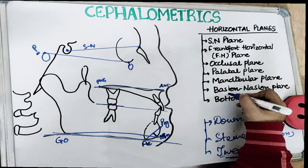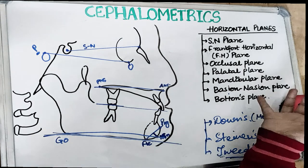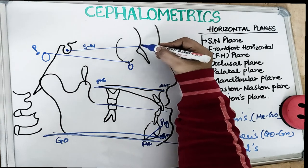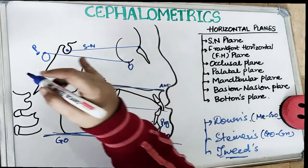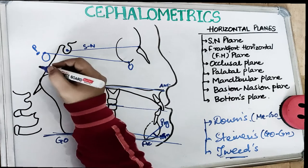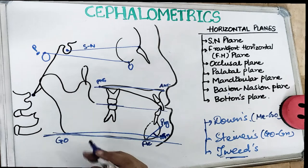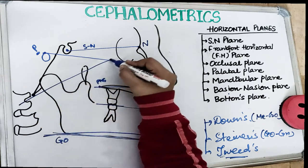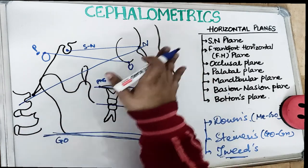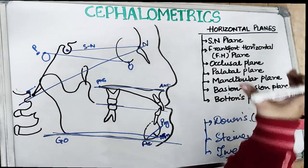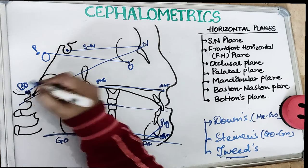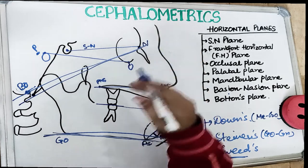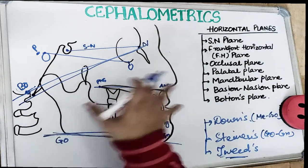The sixth horizontal plane is the basion-nasion plane. As the name indicates, it is a line drawn from basion to nasion. Nasion is the anteriormost point on the frontonasal suture, and basion is the median point on the anterior margin of the foramen magnum. It is a somewhat oblique line but is categorized as close to horizontal. The seventh horizontal plane is Bolton's plane — a line connecting the Bolton point to nasion. The Bolton point is the highest point on the occipital bone. This line is also somewhat oblique but falls under the horizontal category.